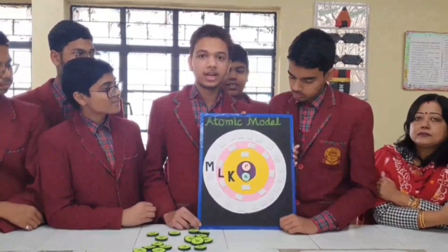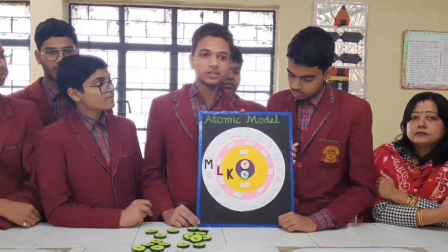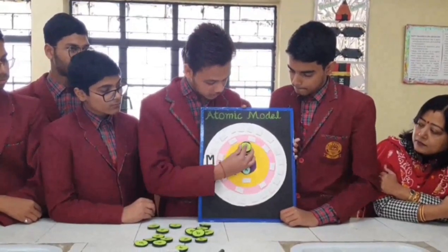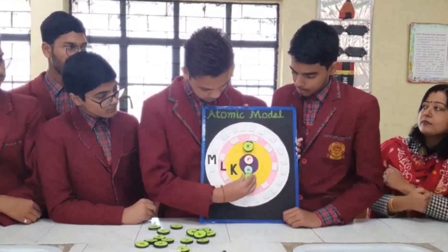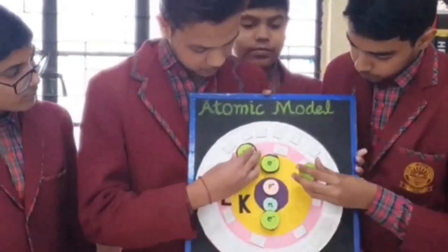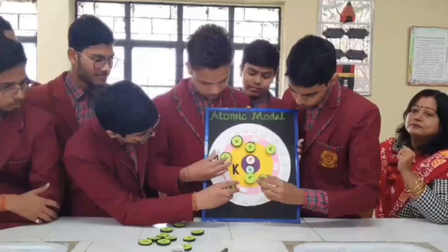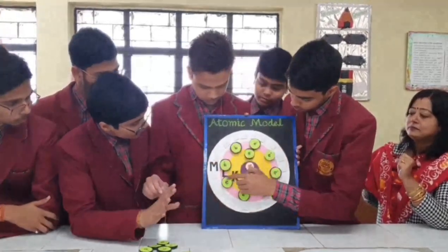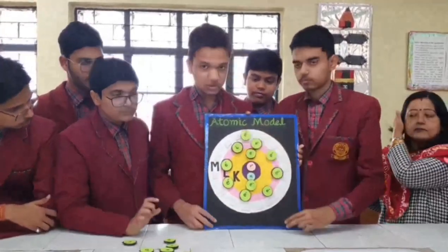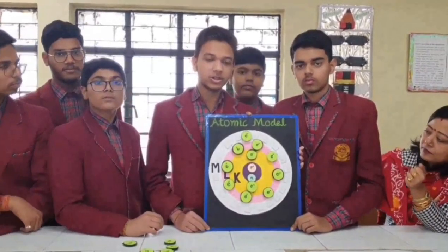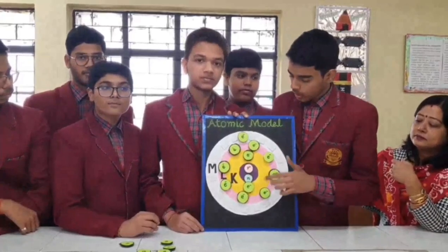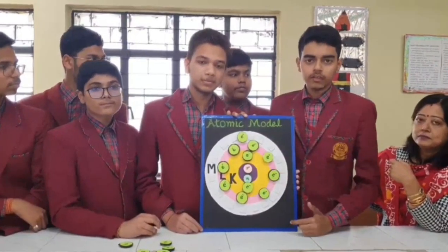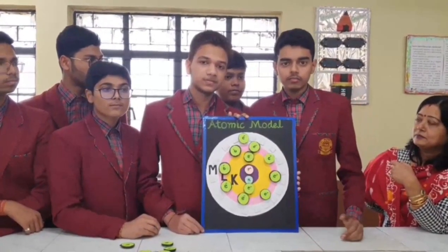As we know that sodium has atomic number 11, the electronic configuration is 2.8.1. In the first shell, 2 electrons. In the second shell, 8 electrons. There are actually 3 shells in sodium. This is the electronic configuration of sodium. As we have seen in sodium, the number of electrons in the valence shell is 1. So we can say that the valence of sodium is 1. This model can also explain the valence of different elements.